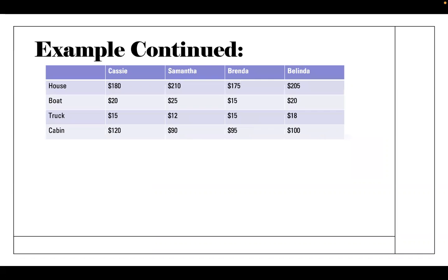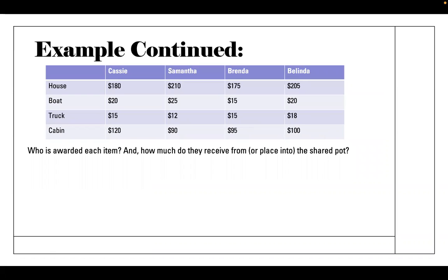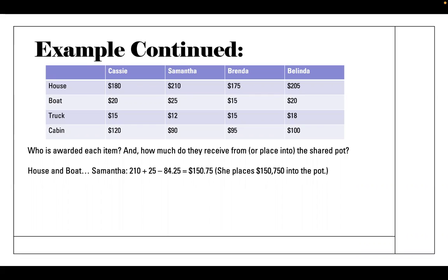Now we determine who is awarded each item — the highest bidder wins it — and figure out whether each person pays into or receives from the pot. The house and the boat both go to Samantha as the highest bidder. Adding her bids of $210,000 and $25,000, then subtracting her fair share of $84,250, leaves $150,750. She places that $150,750 into the pot because she received far more than her fair share.